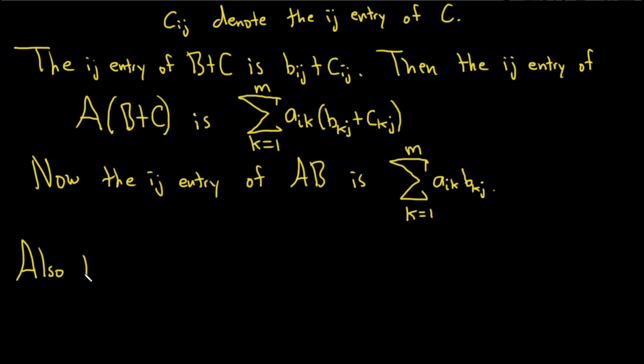Also, the ij entry of AC is simply the sum, as k runs from 1 to m. And again, we're taking the i-th row of A and we're essentially multiplying it by the j-th column of C. So it'll be aik times ckj. So it's again, it's like a dot product of that row of A with that j-th column of C. All right, that's the ij entry of AC.